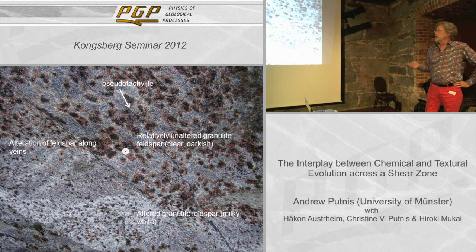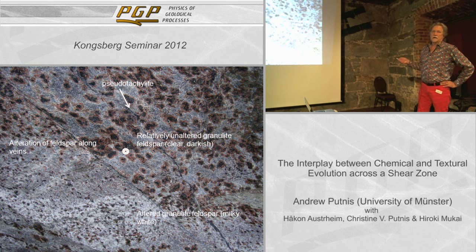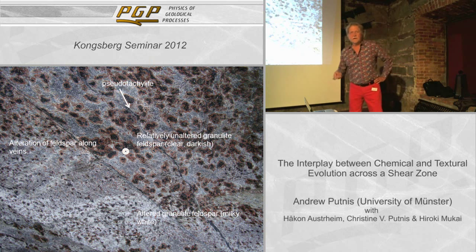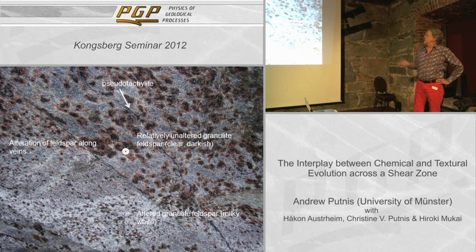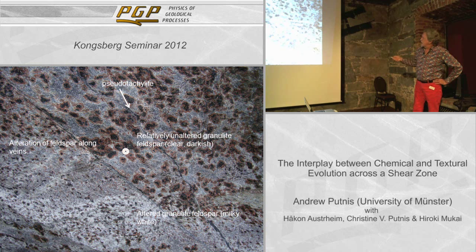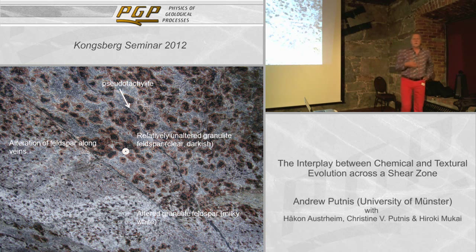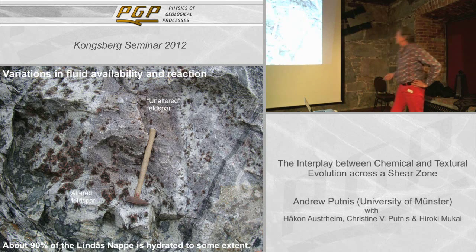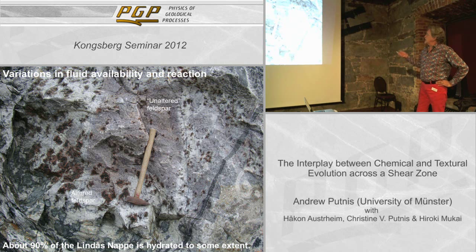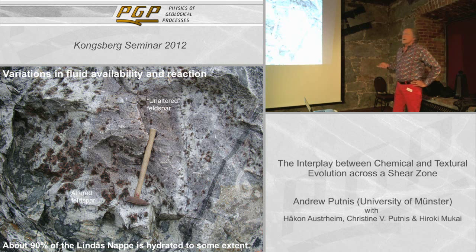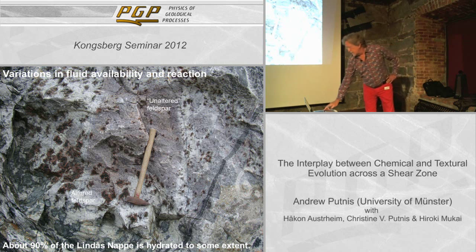So I'm going to show you some data. There's Håkon for scale in this same outcrop. If we look at this outcrop in a bit more detail, we see for a start that it's very heterogeneous in terms of texture. What I'll show you is the influx of fluid. I hope this is a pseudotachylite — we see brittle failure, we see pseudotachylites through here. We see this whitening of the feldspar — the dark feldspar, this brownish-purple stuff, is effectively the granulitic feldspar, relatively unaltered. And the white feldspar has really totally been reacted by fluid.